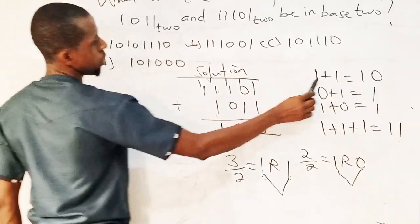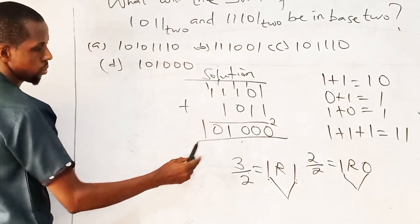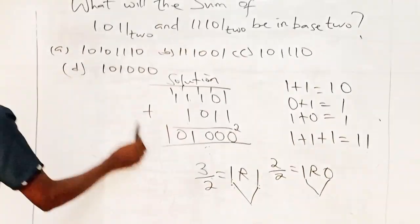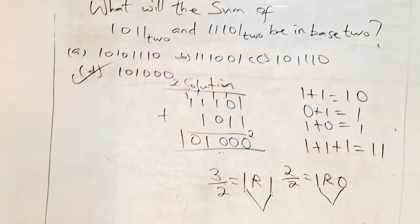1 plus 1 is 10. This is the proof. I have my 0, I have my 1. So my answer is 101000 base 2. Thank you.